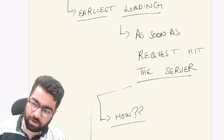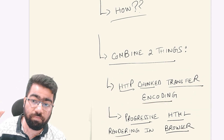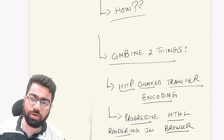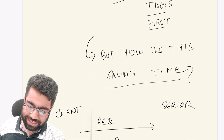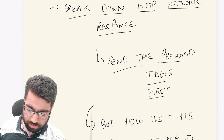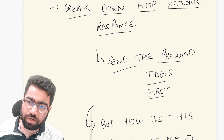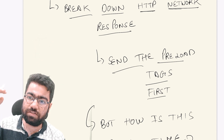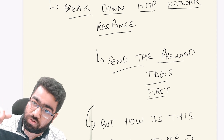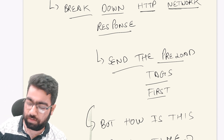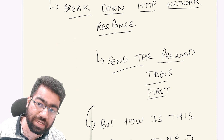We will be combining two things: HTTP chunked transfer encoding and progressive HTML rendering in the browser. From the name itself — HTTP chunked transfer encoding — what we need to do is break down the HTML into chunks. The browser starts parsing it from the top; you don't need the complete HTML at the start. You need the initial tags; the browser will parse those. If there is a JavaScript file being loaded in that tag, the browser will start processing it instead of waiting for further tags. So you can chunk this HTML.